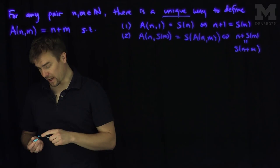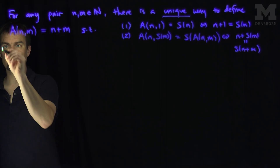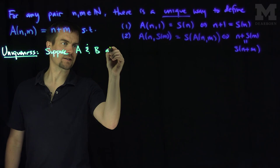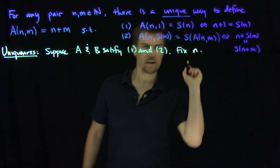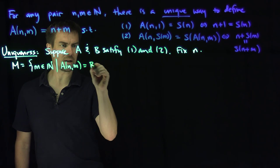The first thing we're going to do is show that if those two properties are true, there's a unique way to define addition. So let's first prove uniqueness. Suppose that A and B are two addition operations both satisfying properties one and two. I'm going to fix n and consider the set M, which is the set of all m in N such that A(n,m) equals B(n,m). I'm going to show this set M is all of N by induction.